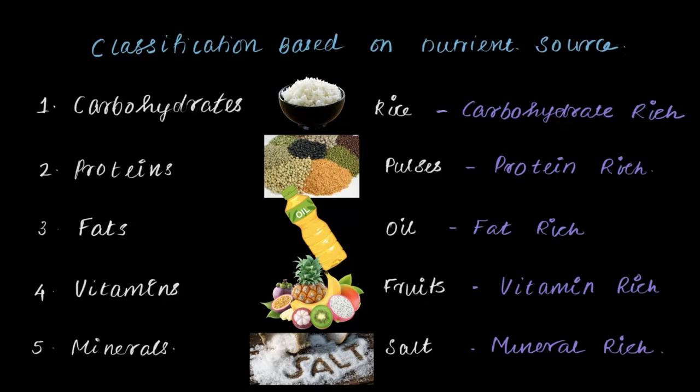We now know that nutrients are special, essential components in food that help our body grow, provide energy, build muscle, and repair and maintain the body. The nutrients discussed are carbohydrates, proteins, fats, vitamins, and minerals. Based on the amount of nutrient present, food is grouped into carbohydrate-rich, protein-rich, fat-rich, vitamin-rich, and mineral-rich. This makes it clear why we need a variety of food — we cannot survive on rice alone, fruits alone, or water alone, as none of these individually meets all our nutritional requirements.